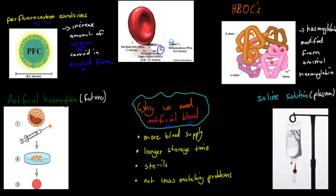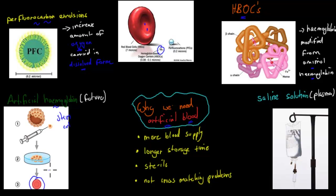We also have hemoglobin-based oxygen carriers. These are basically a modified hemoglobin from animal hemoglobin, and they're quite effective, but the problem is they're not protected by red blood cells. Usually hemoglobin is inside red blood cells, whereas these HBOCs are not inside red blood cells, so they're not as protected, which means they don't last as long as normal hemoglobin. So what we're trying to work on to make it even better is artificial hemoglobin using stem cell research, where our own red blood cells are grown in the lab — meaning we have hemoglobin inside the red blood cells with that protection.